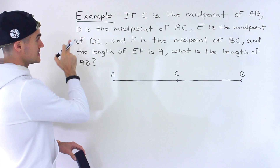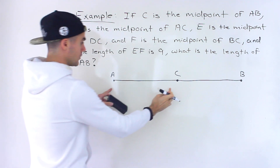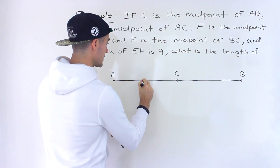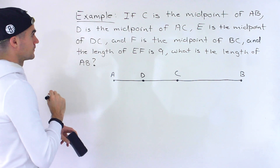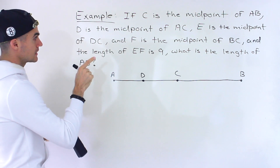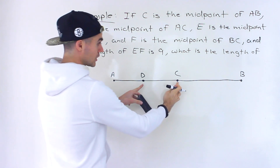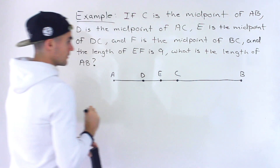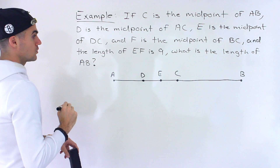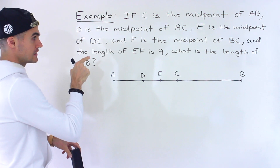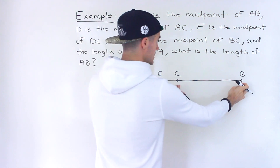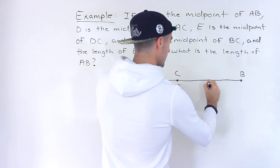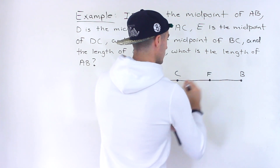And then going further, we're told D is the midpoint of AC. So now notice AC is the line we're looking at, and D is going to be the midpoint of that, over here. And then we're told E is the midpoint of DC, so now we're looking at this line, and the midpoint of that is going to be E. And then we're told F is the midpoint of BC — so BC is over here, and the midpoint of that is F, right there.